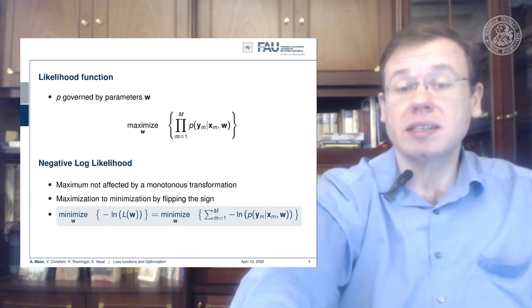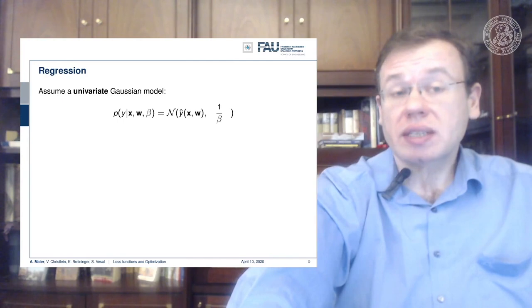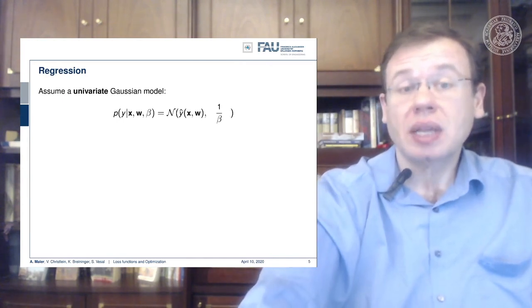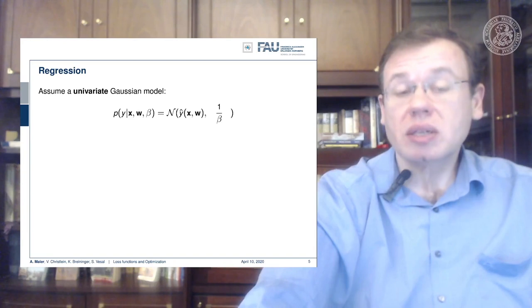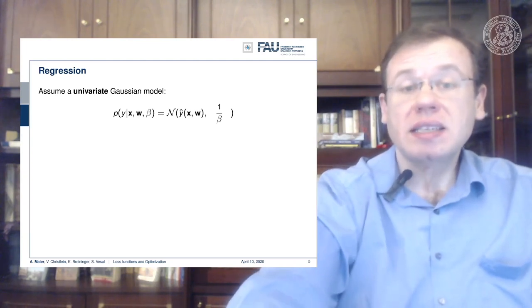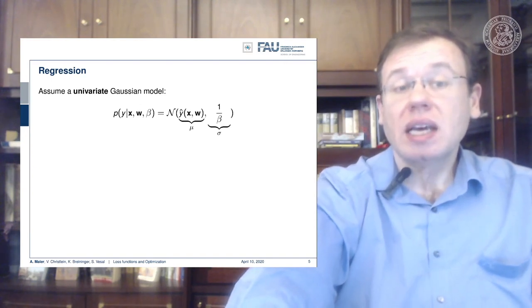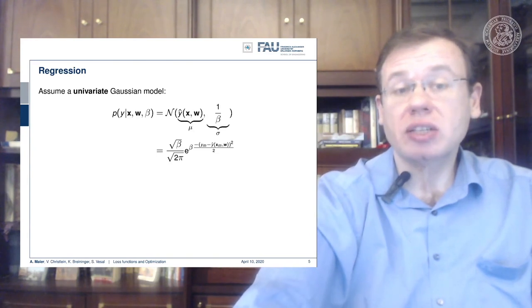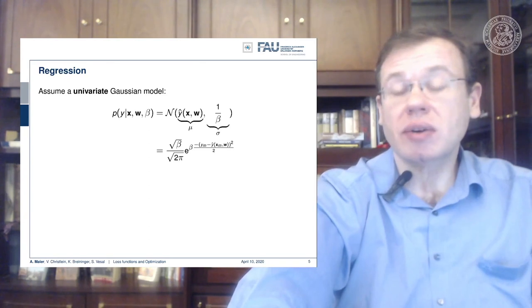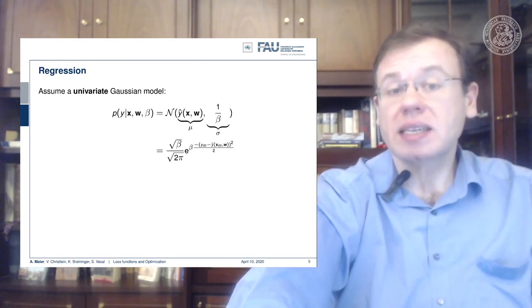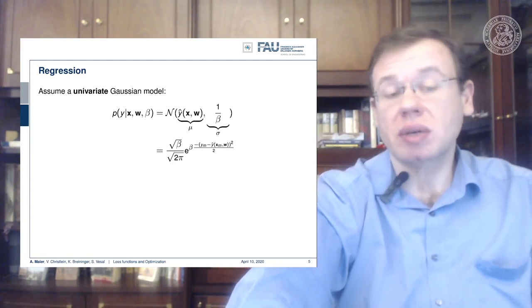Now we can look at the univariate Gaussian model. We are one-dimensional again, and we can model this with a normal distribution where we would then choose the output of our network as the expected value and one over some variable beta as the standard deviation. If we do so, we can find the following formulation: we get square root of beta over square root of 2π times the exponential function to the power of minus beta times (the label minus the prediction) to the power of 2, divided by 2.